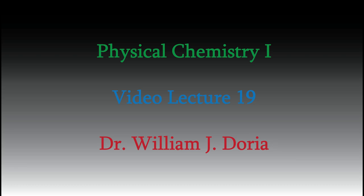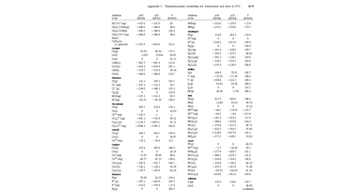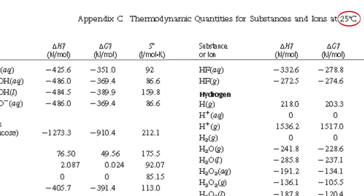Hi, and welcome back to my series of videos for Physical Chemistry 1. In the last video, we looked at ways to predict the enthalpy of a chemical reaction using Hess's law and the enthalpies of formation of the reactants and products of the reaction. The problem is that those enthalpies of formation come from published data that were collected at standard temperature, which is 25 degrees Celsius. What if we're looking at a reaction that happens at a different temperature?